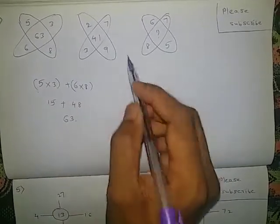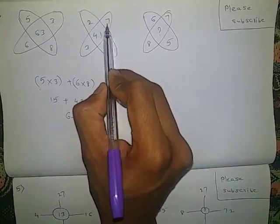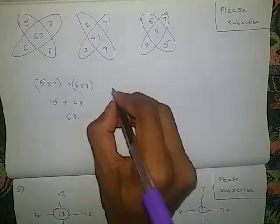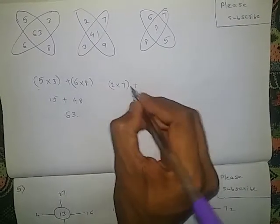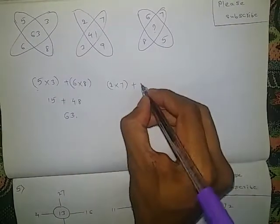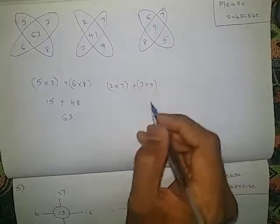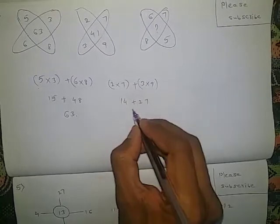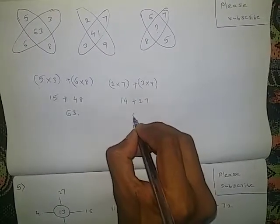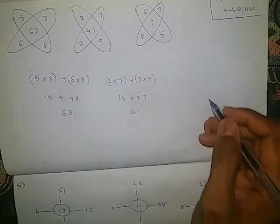Here also the same: upper numbers multiplication — 2 into 7, plus lower numbers — 3 into 9. 2 into 7 is 14, plus 3 into 9 is 27. 14 plus 27 is 41.